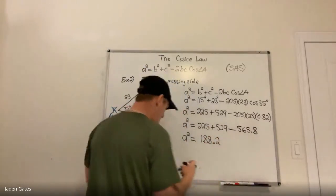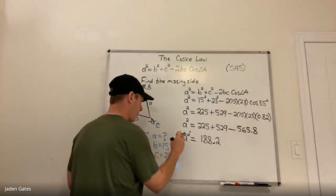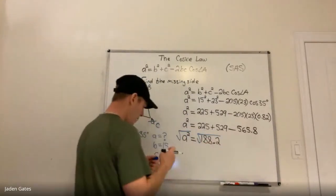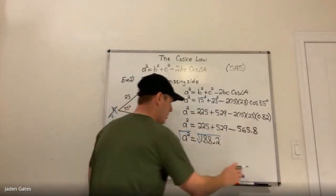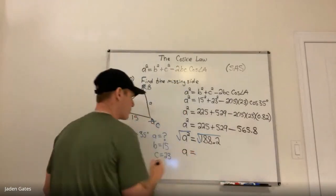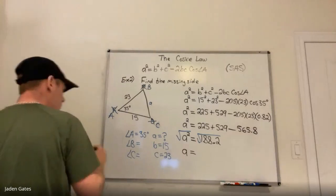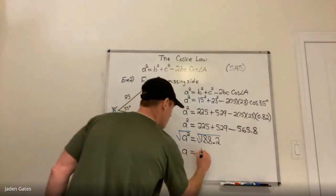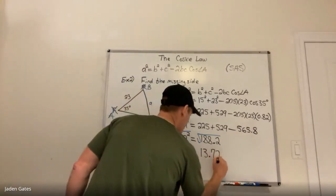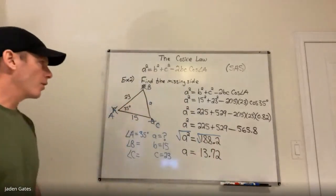Then our last step: take the square root of both sides. The square root gives us 13.72, and there we go.